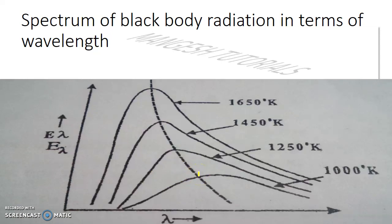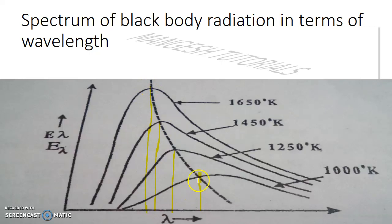The third result concerns lambda-max, the wavelength corresponding to maximum intensity. Lambda-max decreases with increasing temperature — meaning for 1000 K, 1250 K, 1450 K, and 1650 K, the lambda-max comes sooner on the x-axis as temperature increases.